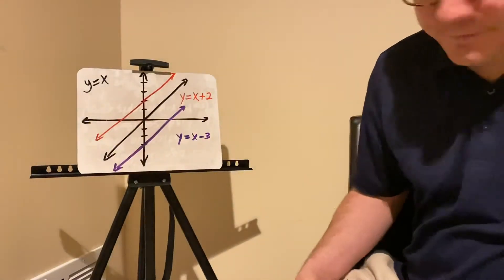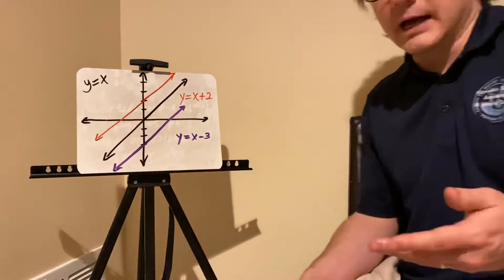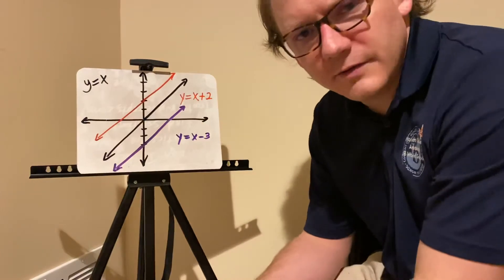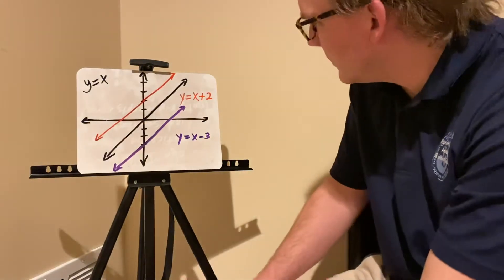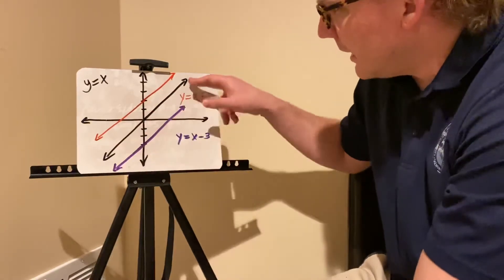All right, so here are some lines. All of these lines are parallel. They're all the same slope, but there's slight differences to them, and the difference is their y-intercept.